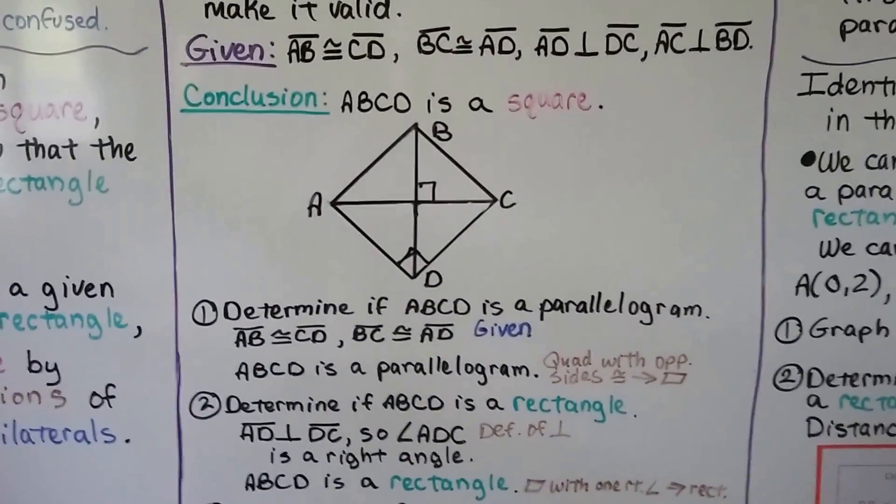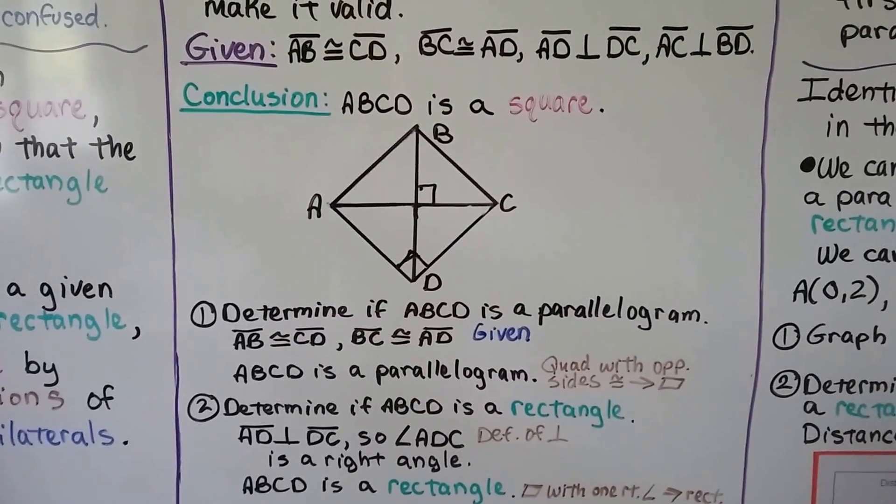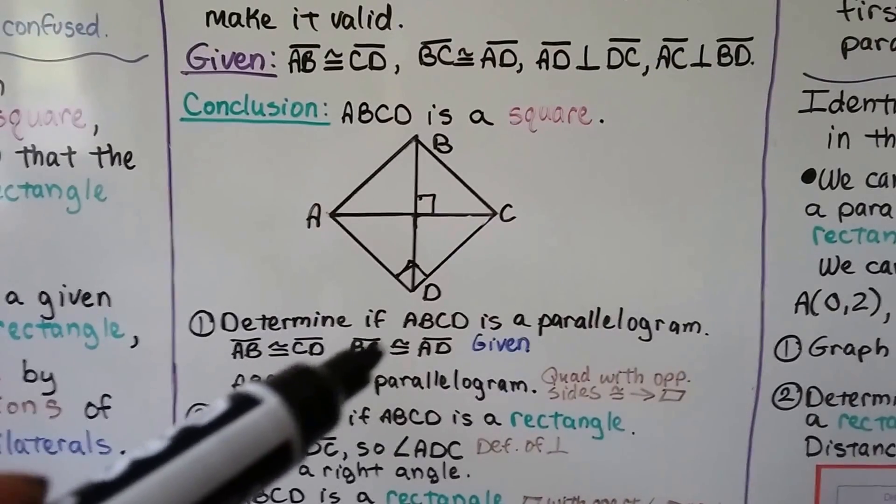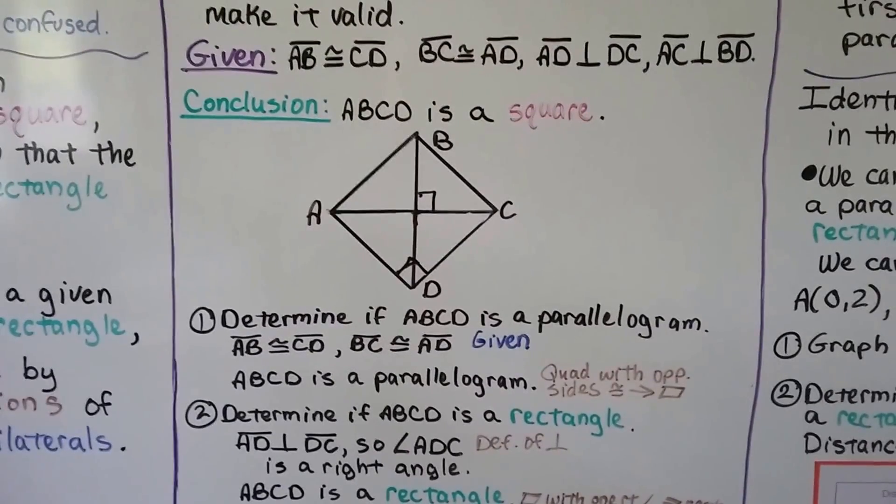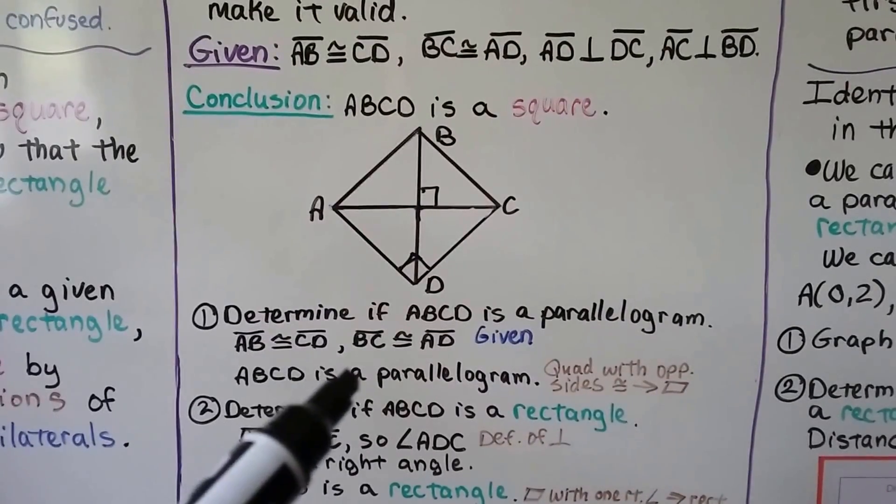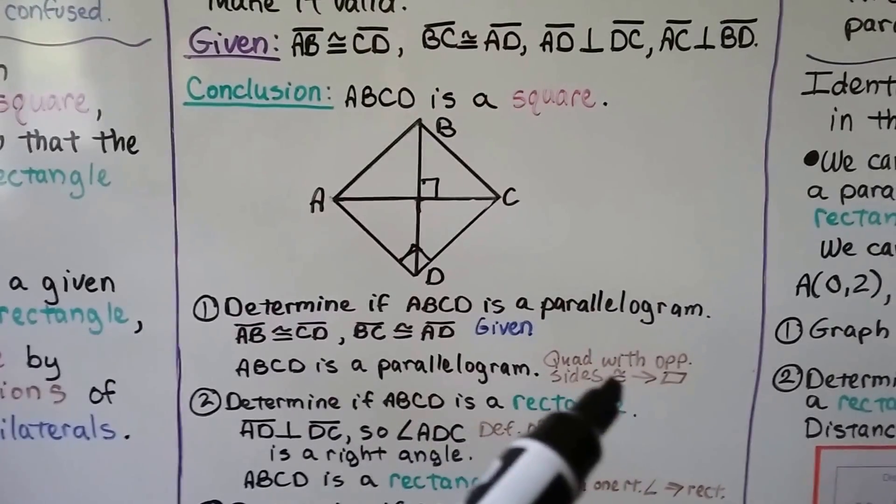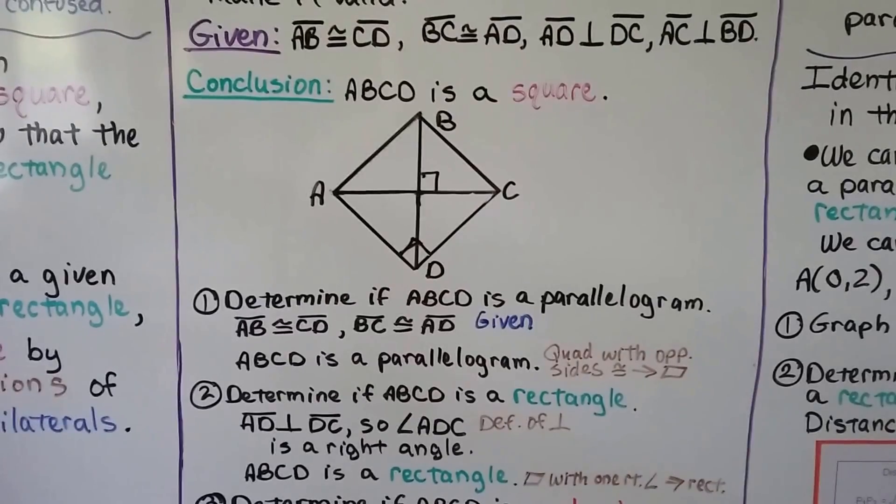First thing we do is determine if ABCD is a parallelogram. We have AB is congruent to CD and BC is congruent to AD. That was given. So ABCD is a parallelogram because quadrilaterals with opposite sides congruent are parallelograms.